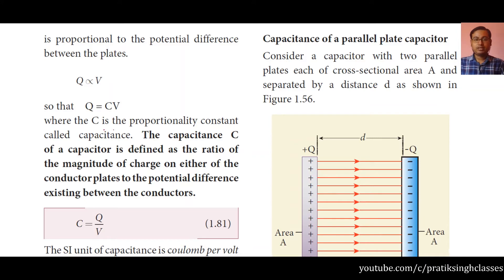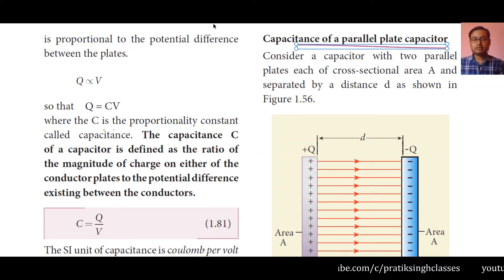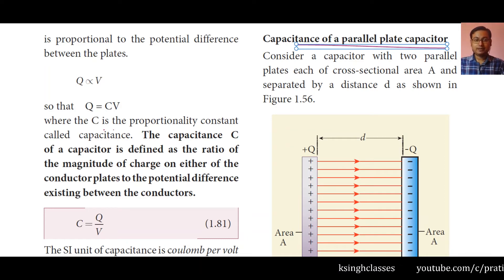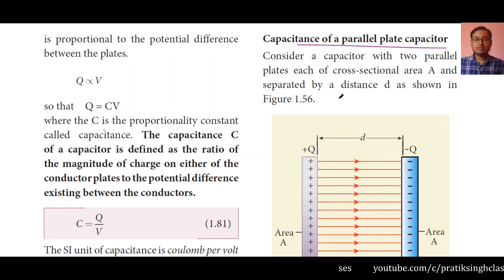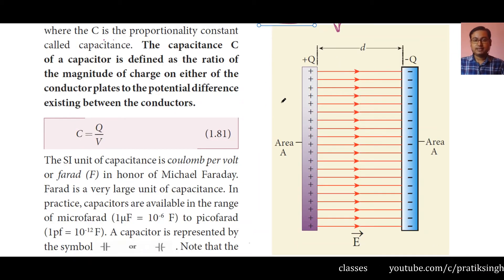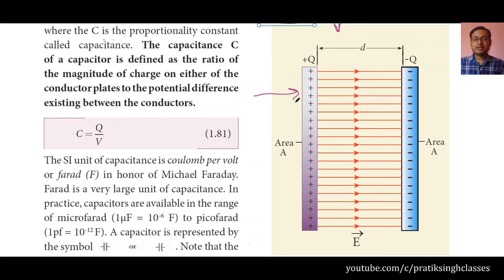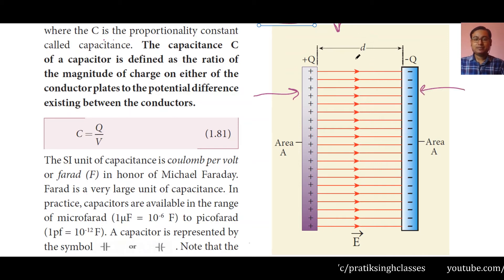Now, coming to the next topic: Capacitance of a Parallel Plate Capacitor. Capacitors can be connected in either of two ways: parallel or series. We will see both. Consider a capacitor with two parallel plates, each of cross-sectional area A, separated by a distance d, as shown in figure 1.56. The left plate is positively charged with +Q and the right plate is negatively charged with −Q. The separation between the plates is d.